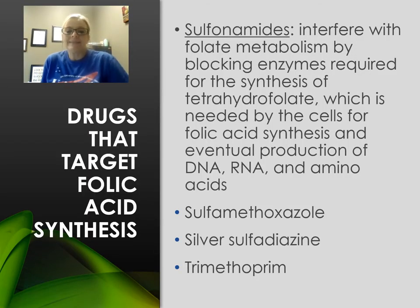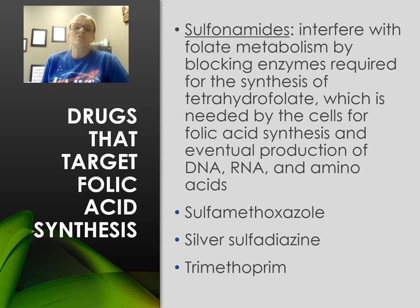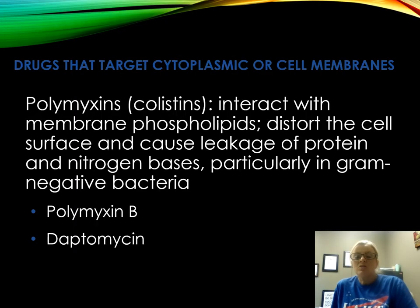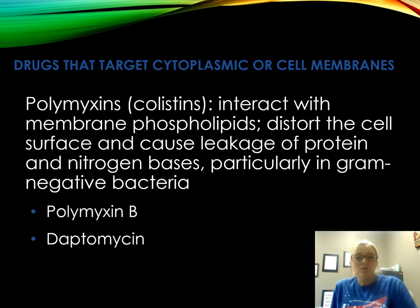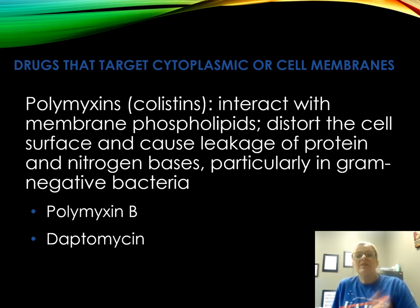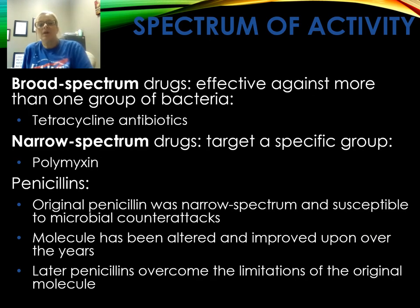Drugs targeting folic acid synthesis include sulfonamides (sulfa drugs), commonly used to treat UTIs and some protozoa. Silver sulfadiazine is good for burns or eye infections. Polymyxins target cytoplasmic or cell membranes and are good for drug-resistant species like Pseudomonas or severe UTIs caused by gram-negative rods. Know the distinction: tetracyclines are broad spectrum, while polymyxins are more narrow spectrum.